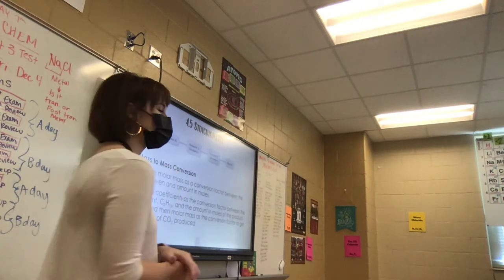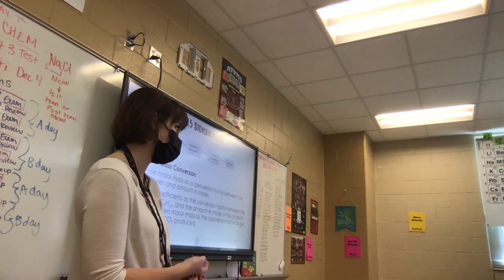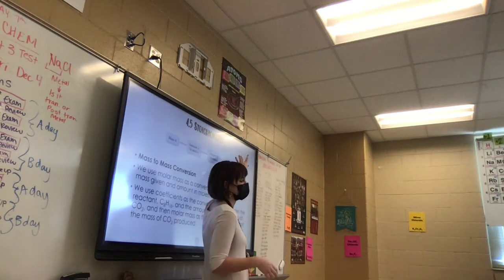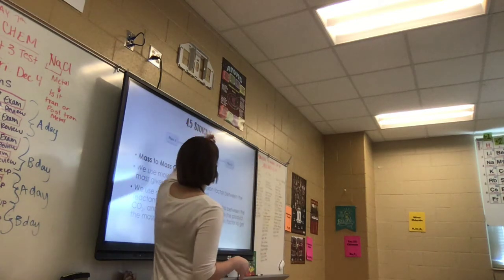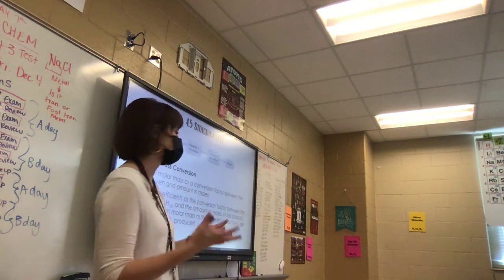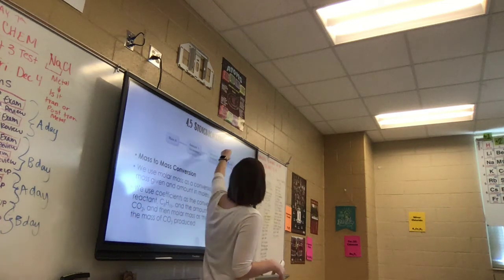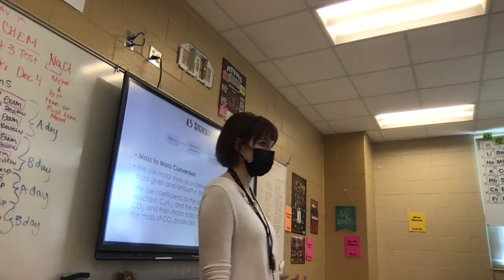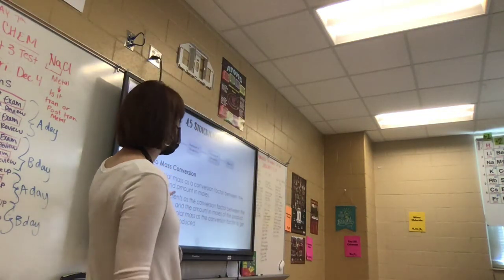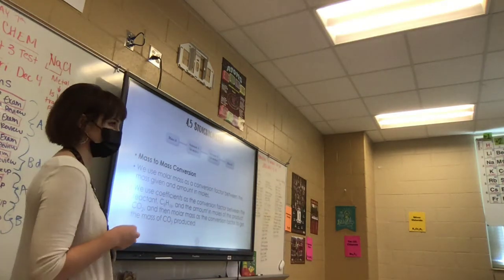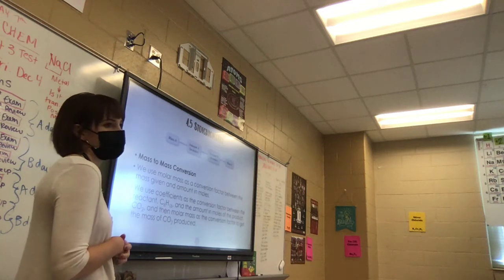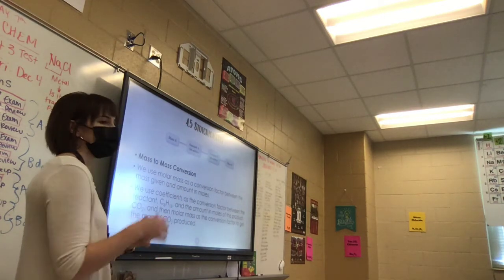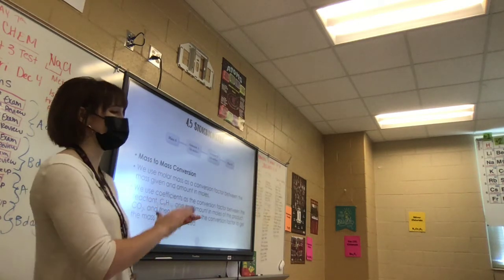Mass-to-mass conversions are what we use most in the lab. To go from mass of A to mass of B, convert mass of A to moles of A using molar mass, then use the mole-to-mole ratio from the balanced equation to get moles of B, then convert to mass of B using the molar mass of B. Sometimes they'll give you a balanced equation; other times you'll need to write one yourself.